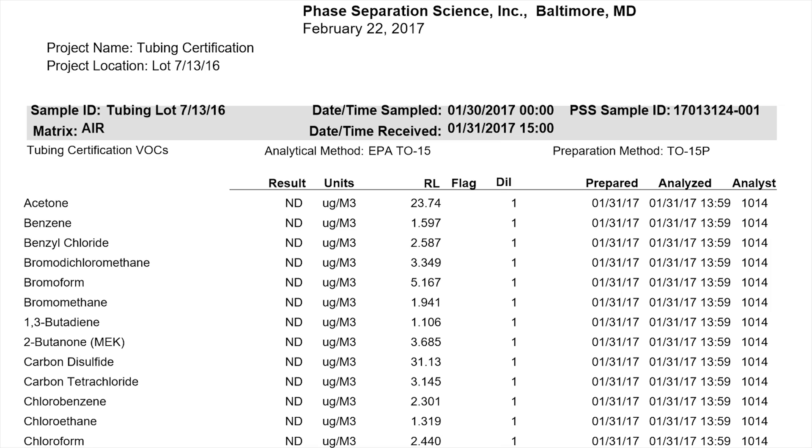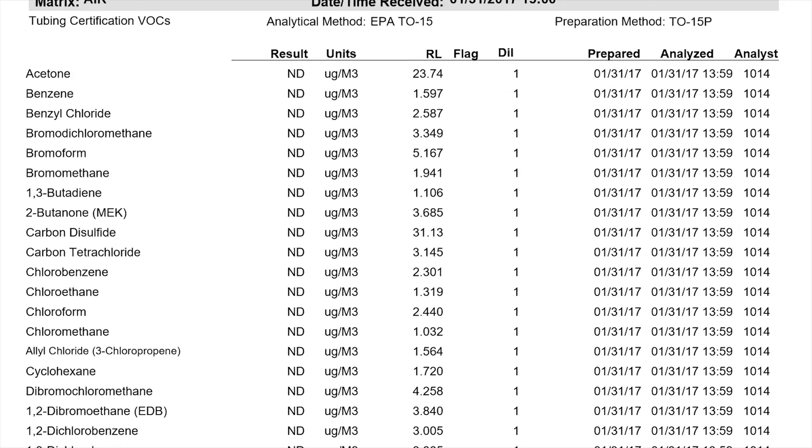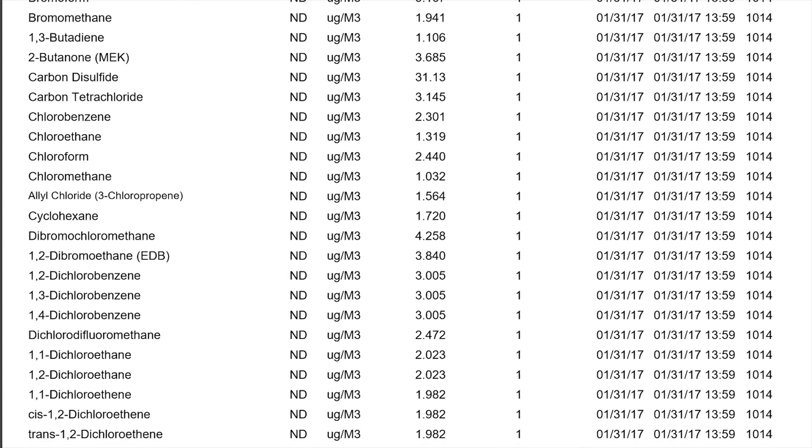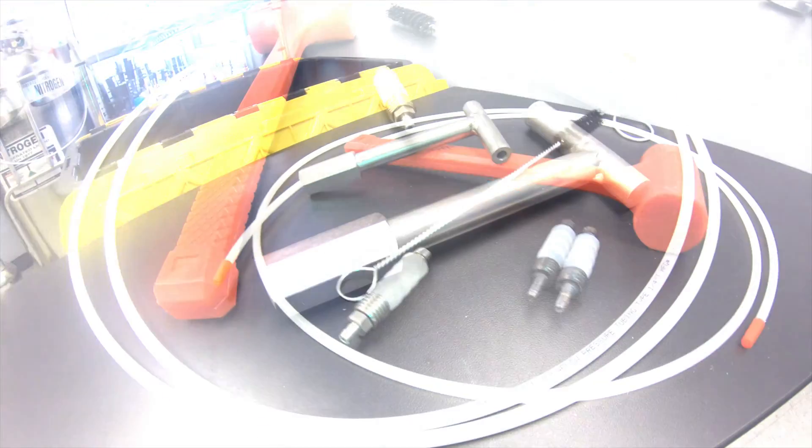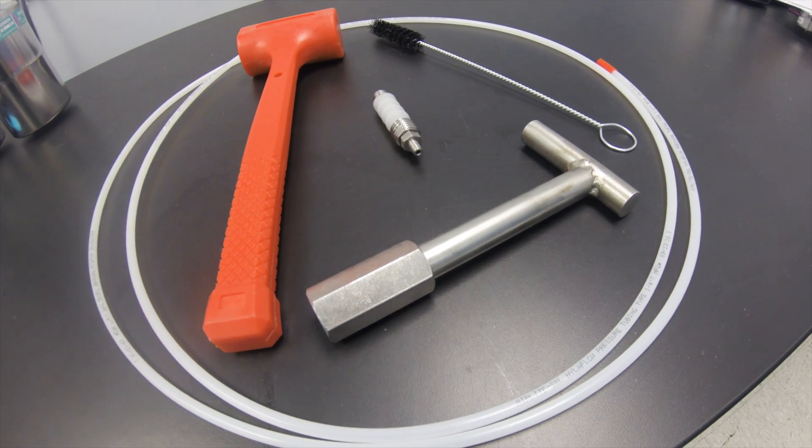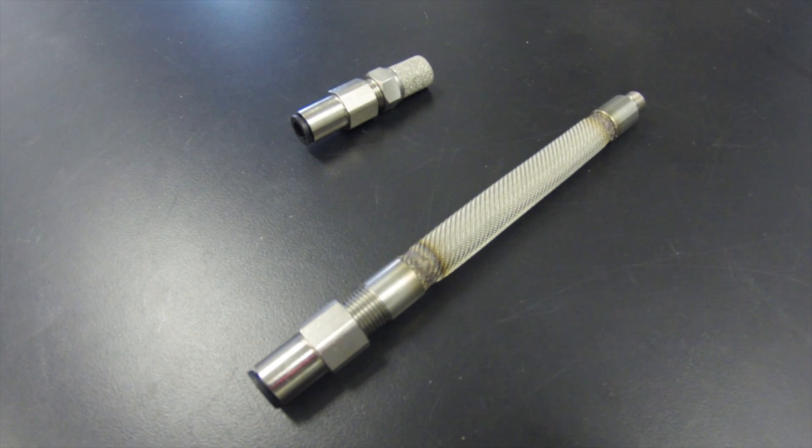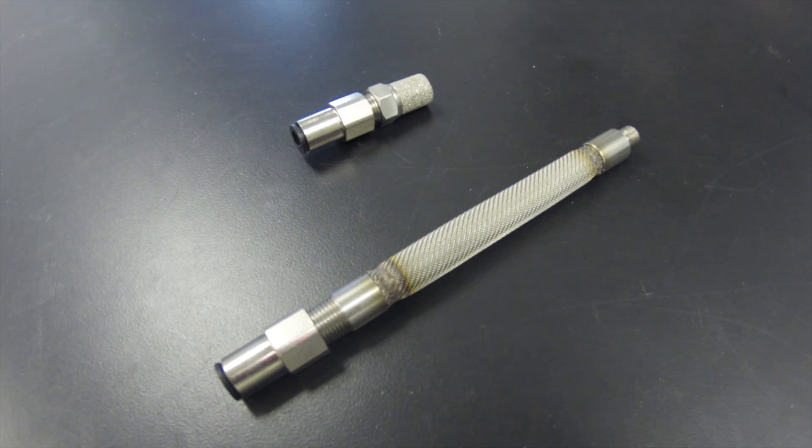With all the effort that goes into providing the cleanest canisters and flow controllers, it only makes sense to utilize the cleanest tubing. We rent vapor pin installation kits and hammer drills for sub-slab sampling as a convenience to our clients. We also sell sampling points for subsurface samples that have been certified clean and have been determined not to absorb VOC compounds from the sample.